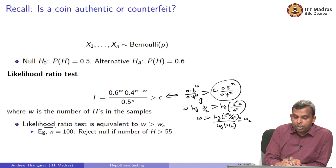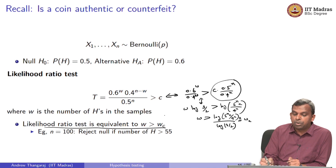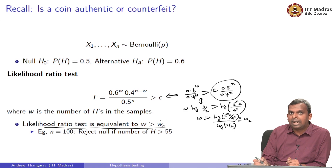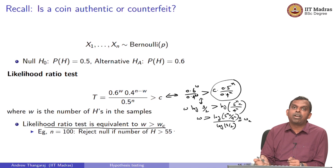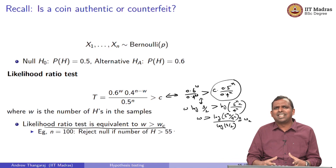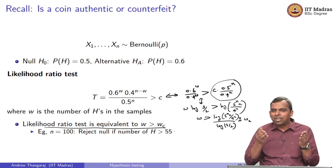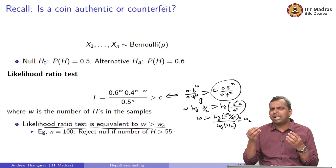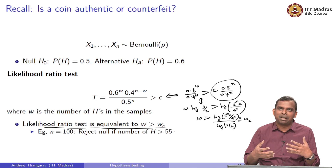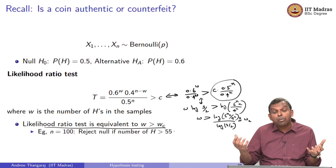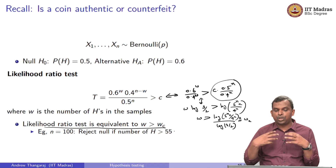So the likelihood ratio test, which looks like a complicated expression, is equivalent to w — just the number of heads — being greater than some w_c. You keep changing this w_c from 0 to n; for every w_c you get a test. For example, if n is 100, you may have a test which rejects null if the number of heads is greater than 55. This is very natural: you are tossing a coin that could be 0.5 or 0.6, and the clearest indicator is the number of heads. These tests make a lot of sense, are intuitive, and they come from the likelihood ratio.